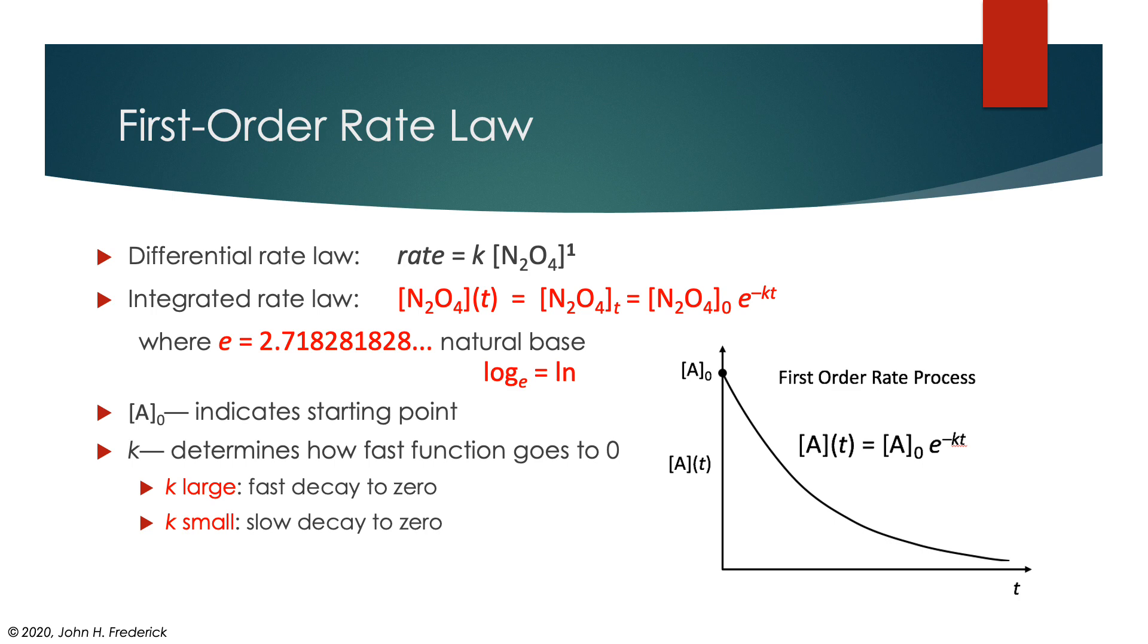It will eventually approach zero at infinite time. So as time gets very large, that quantity e^(-kt) is going to get very, very small. We now understand some of the elements that go into this, and some of the elements that shape this integrated rate law for this particular equation.